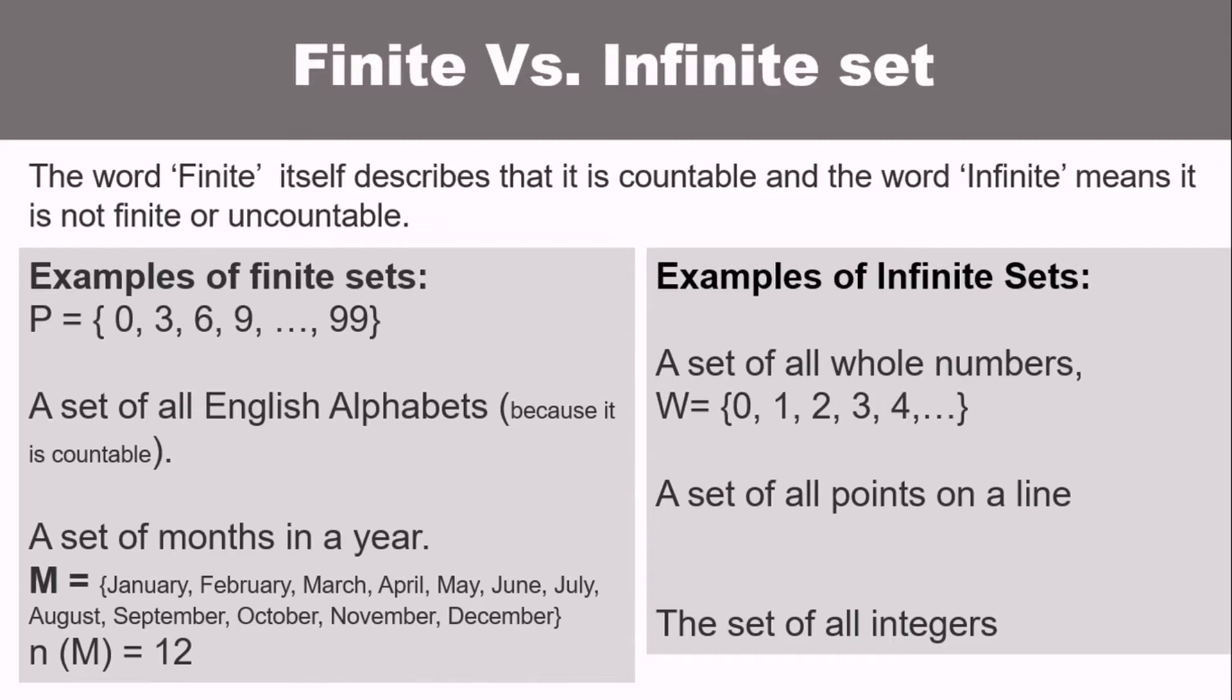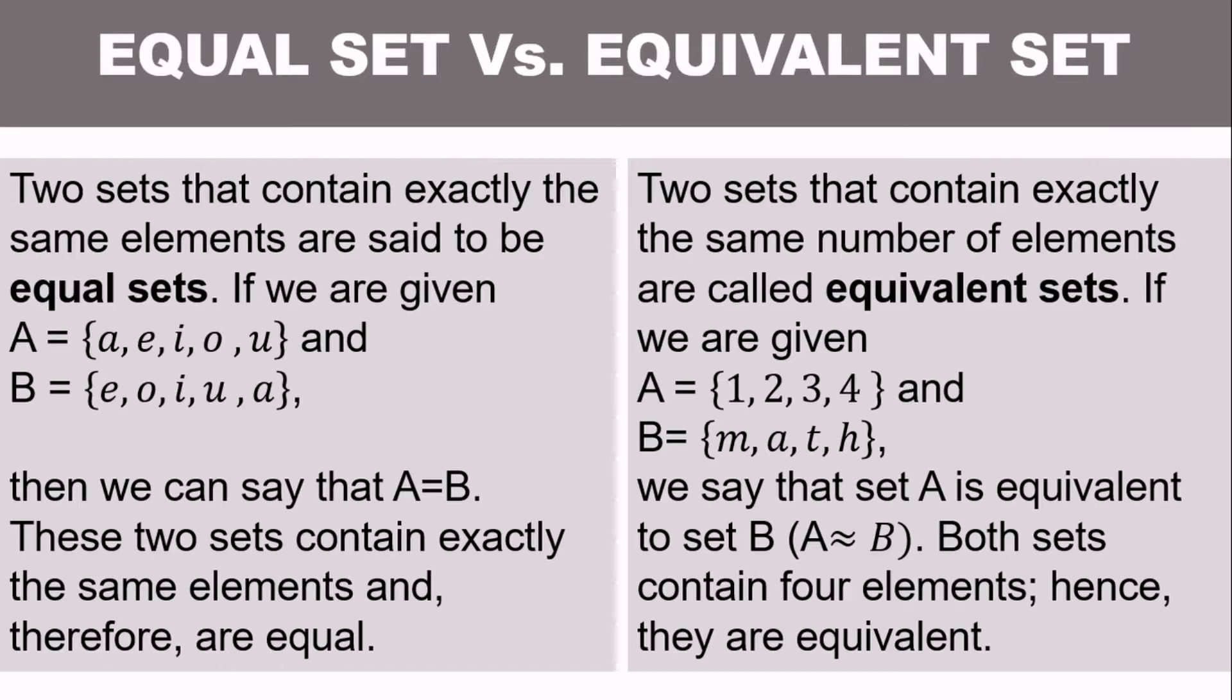Next, what's the difference between equal set and equivalent set? Two sets that contain exactly the same elements are said to be equal sets. The elements must all match regardless of who came first or last in the elements. For example, set A has elements a, e, i, o, u. And for set B, we have e, o, i, u, a. Regardless of who came first, as long as they have the same set or elements, that is considered an equal set. So then we can say that A is an equal set of B. These two sets contain exactly the same elements and therefore are equal.